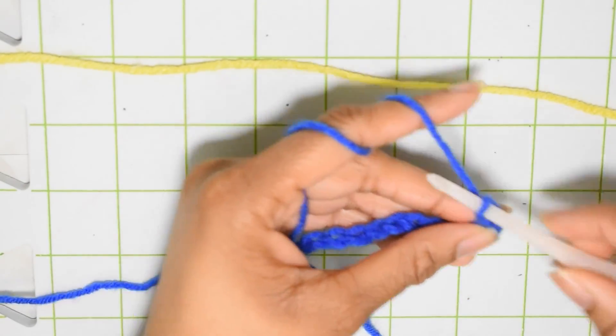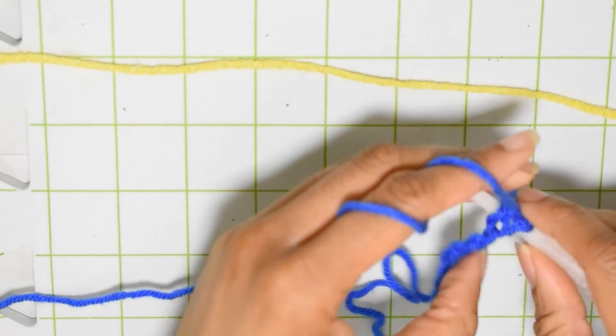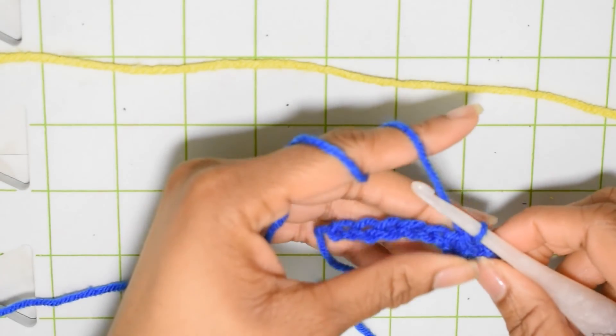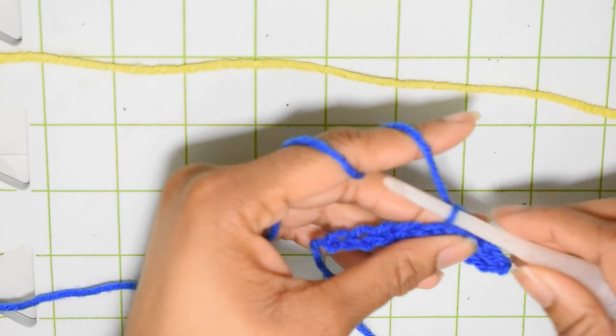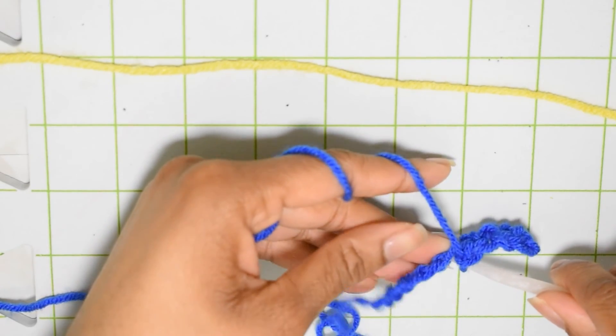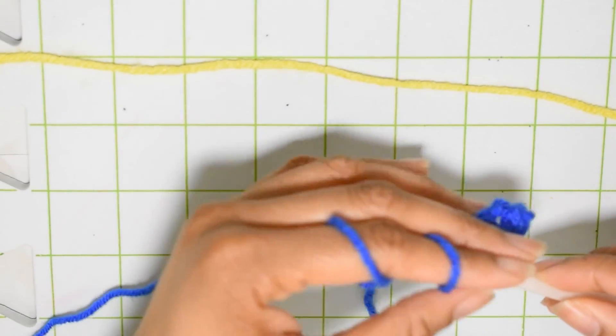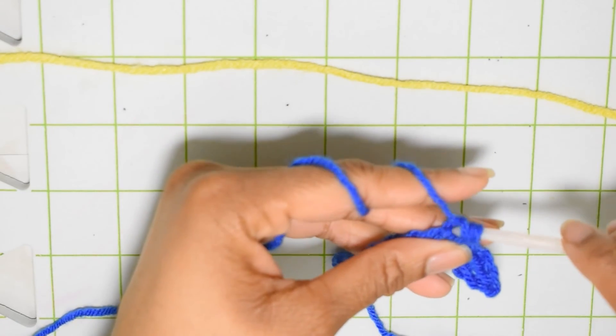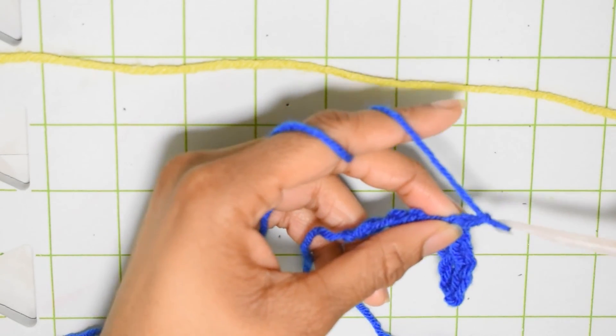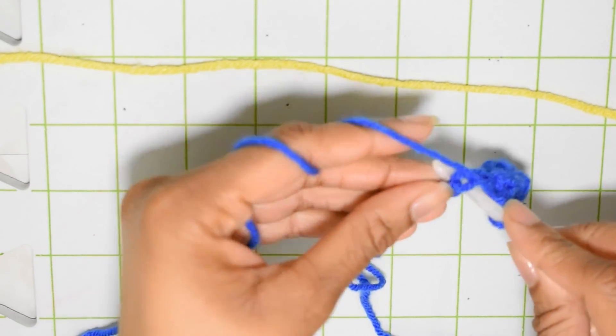Chain one, you're going to skip the next stitch and we're going to single crochet into the next stitch. Okay chain one and a single crochet into the next stitch. All right so that's going to be our pattern: chain one, skip a stitch, single crochet into the stitch after the one you skipped.